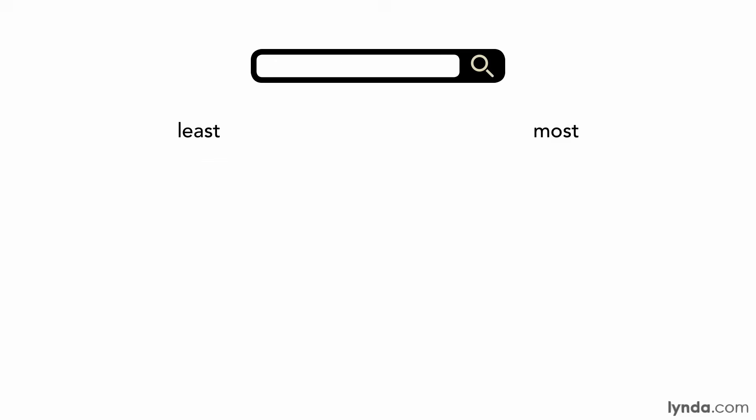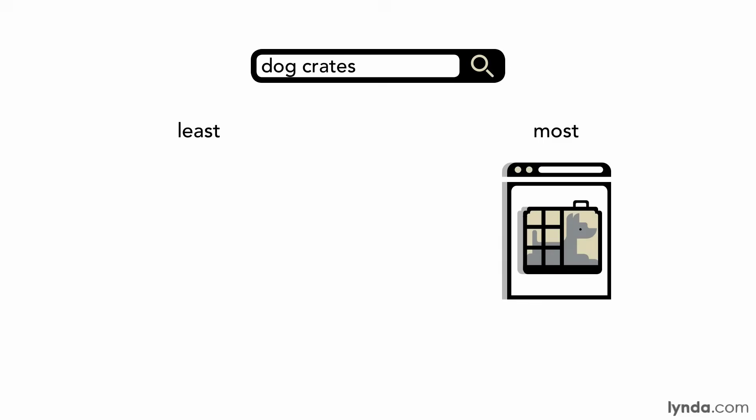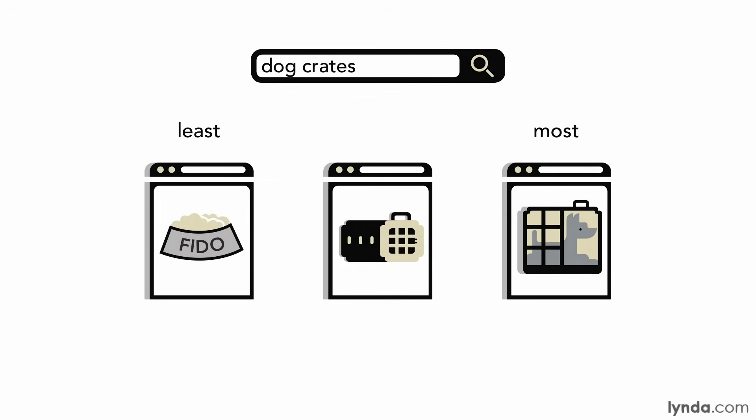Take another example, dog crates. A search engine knows that pages selling dog crates are extremely relevant to that search query, but it also knows that websites about pet carriers are also very relevant. It also knows that a website promoting things like pet food and dog toys might also be relevant to that search query, but perhaps less so.